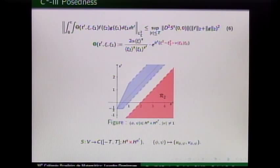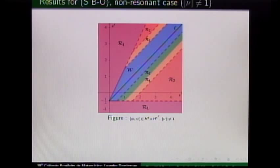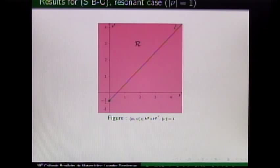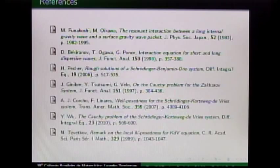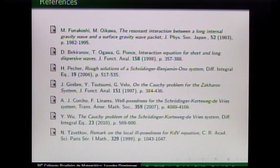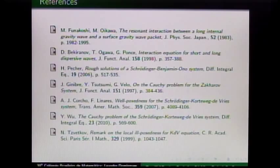I am finishing. Let's show again this figure which summarizes the results: local well-posedness here, C2 ill-posedness here, C2 ill-posedness here, C2 ill-posedness here, and bilinear estimate fails for the resonant case. For the resonant case, we prove that the Pescher result is sharp except for the endpoint. Here we have the main references for our work. That's what I wanted to talk about today. Thank you very much.